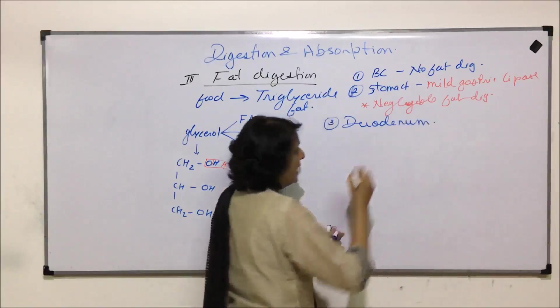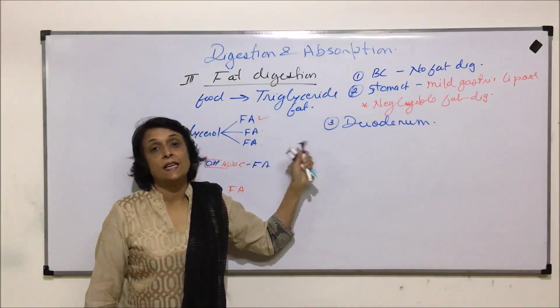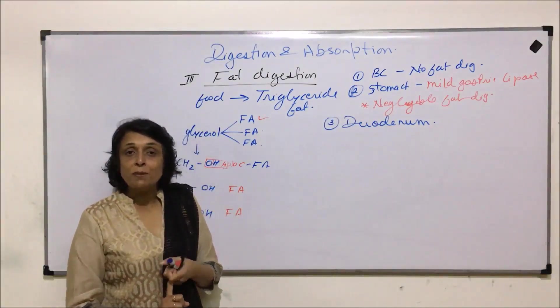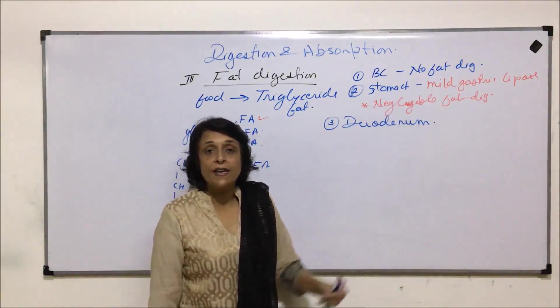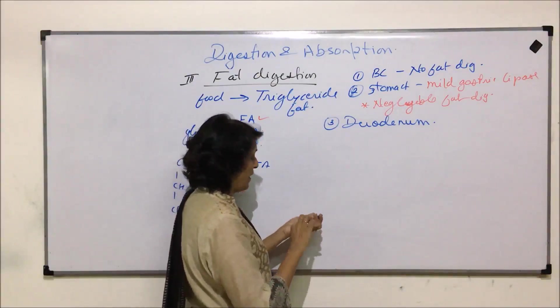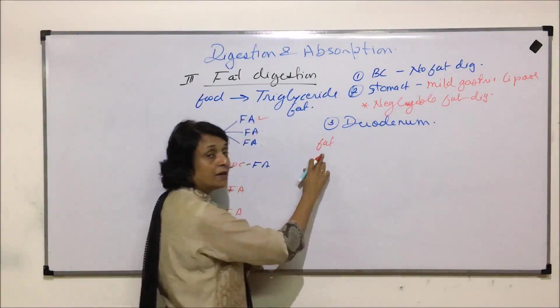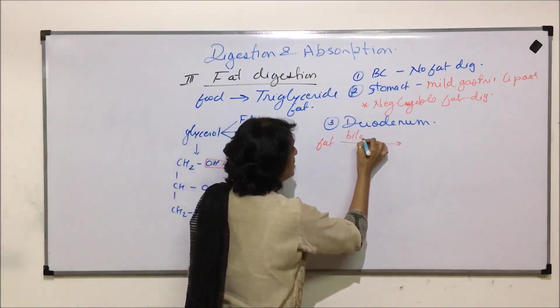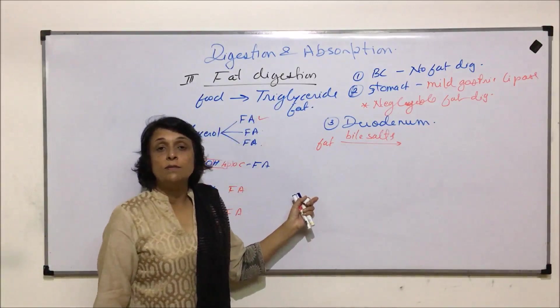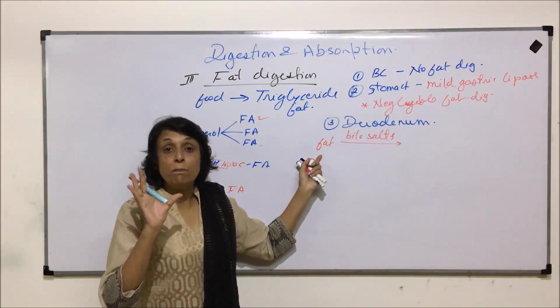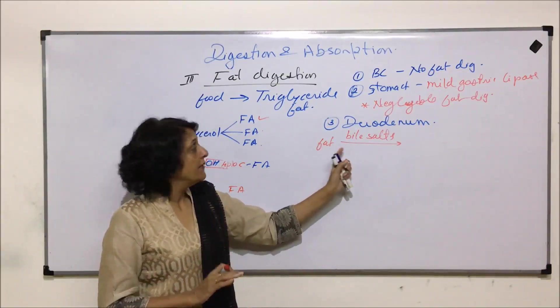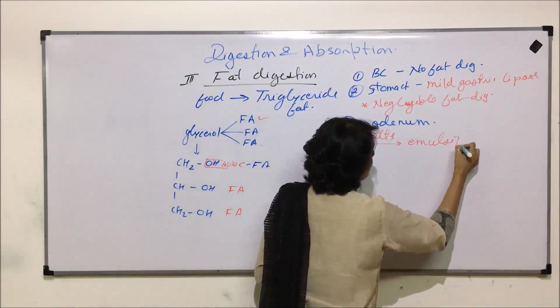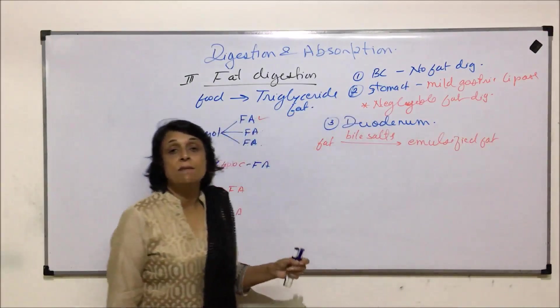The third location where fat digestion takes place is duodenum. In duodenum, first the fat gets emulsified. This is one more reason why gastric lipase has negligible action. Here the fat is acted upon by bile salts - sodium glycocholate and sodium taurocholate. They break down this big piece into smaller droplets. Here there is no bond broken, only a big drop is broken down into smaller droplets. This is known as emulsified fat.